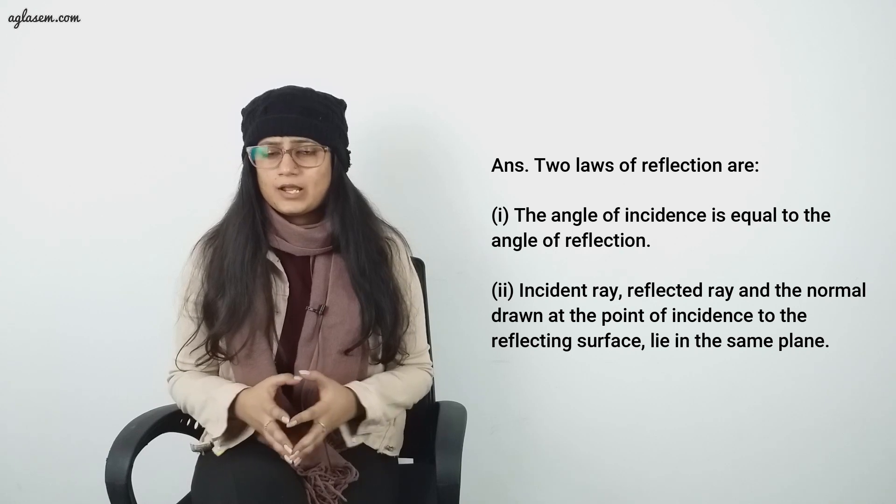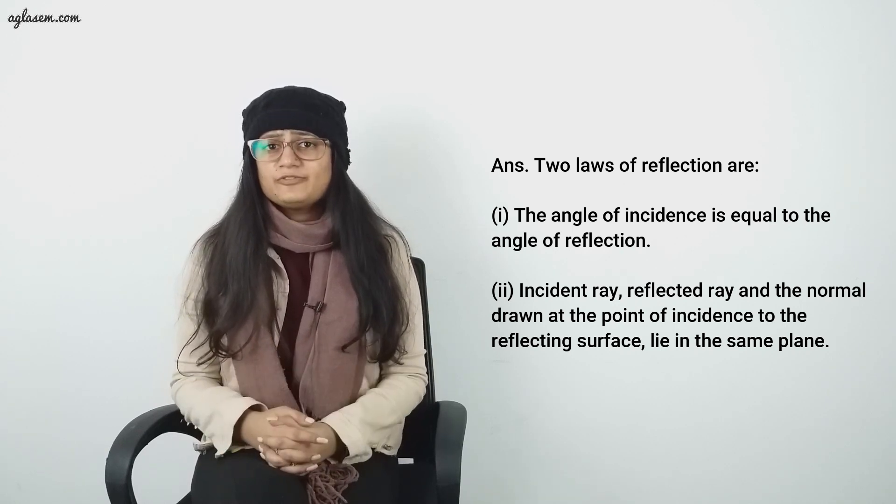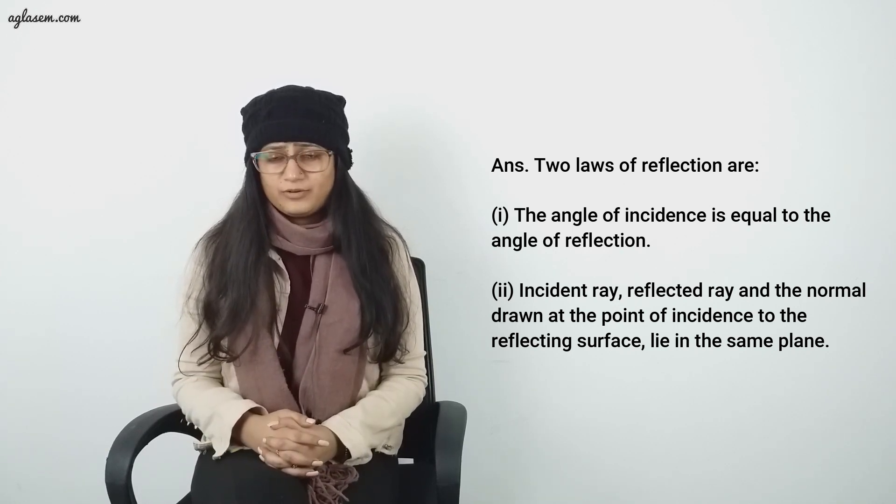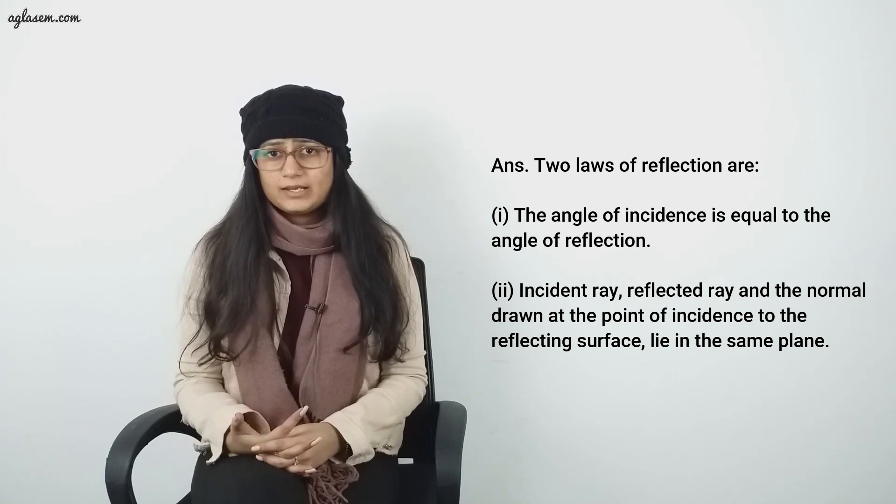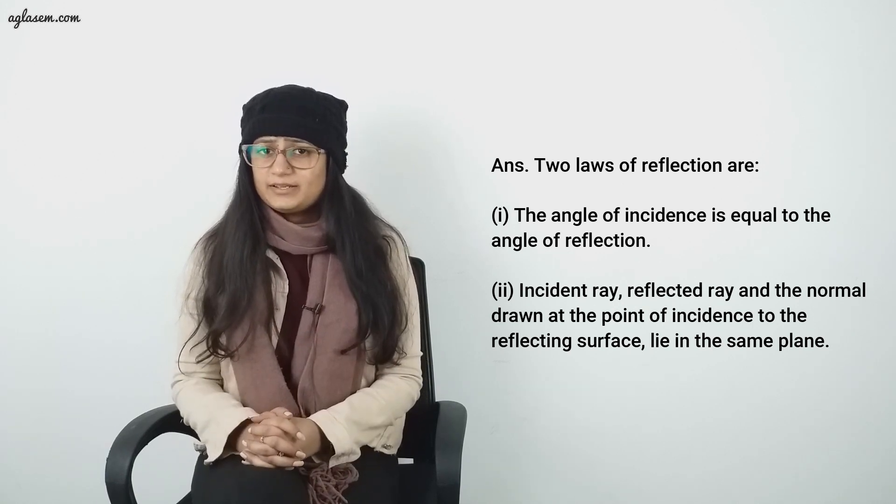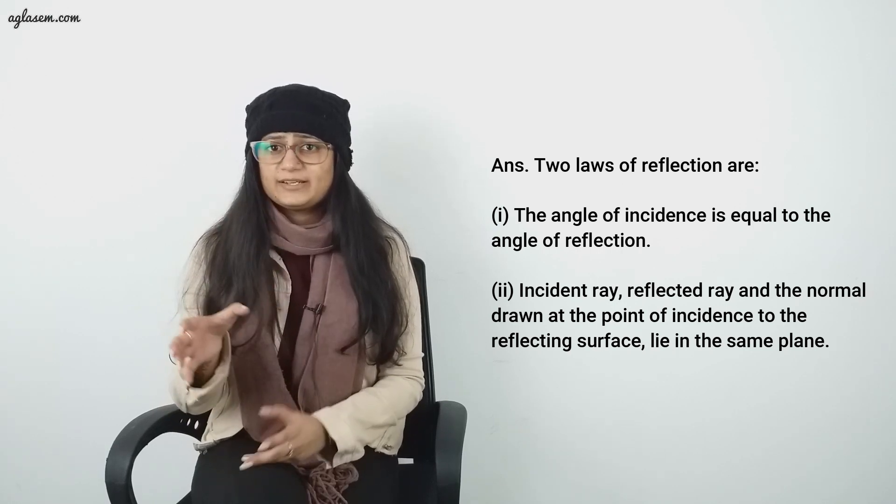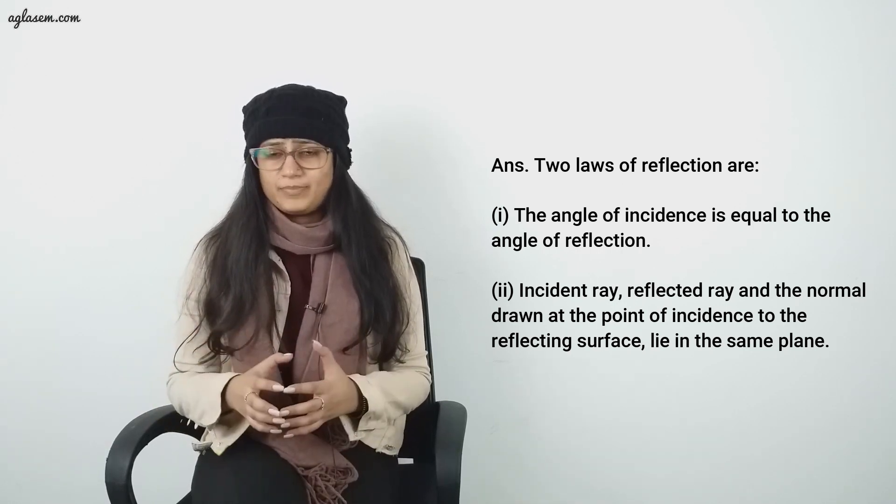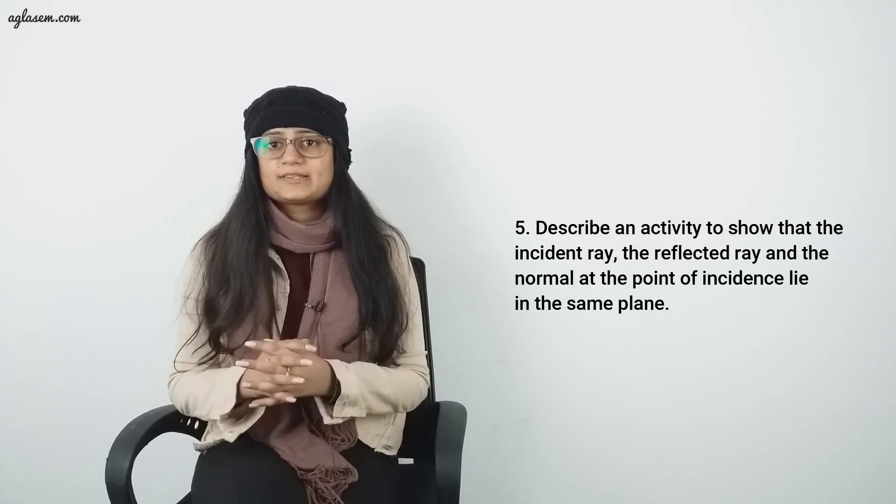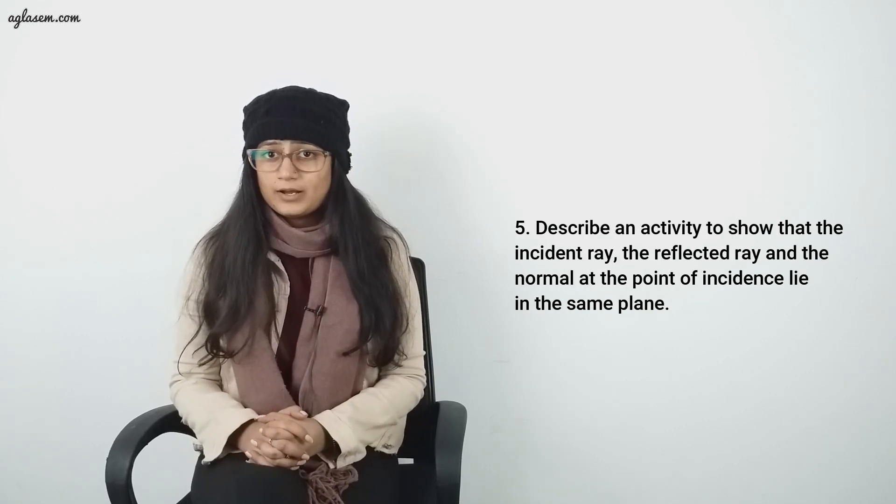Question number 4: State the laws of reflection. Answer: Two laws of reflection are: First, the angle of incidence is equal to the angle of reflection. Second, incident ray, reflected ray, and the normal drawn at the point of incidence to the reflecting surface lie in the same plane.